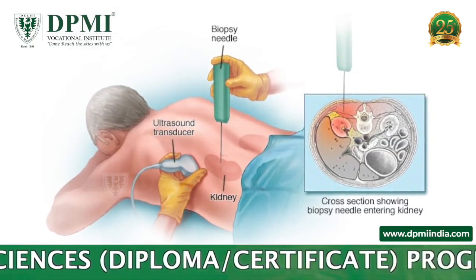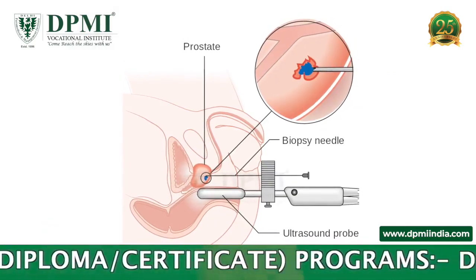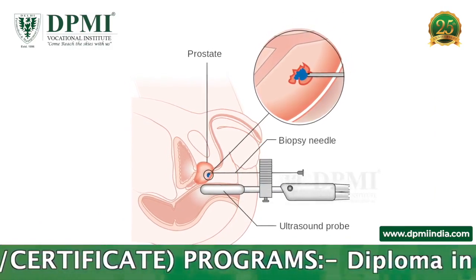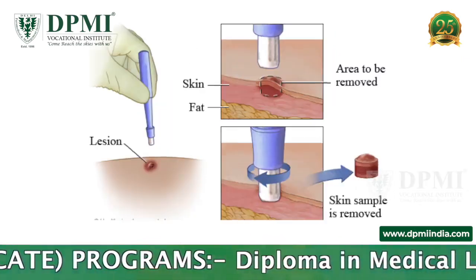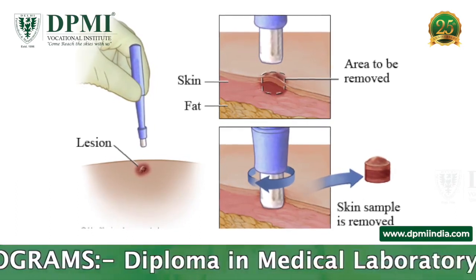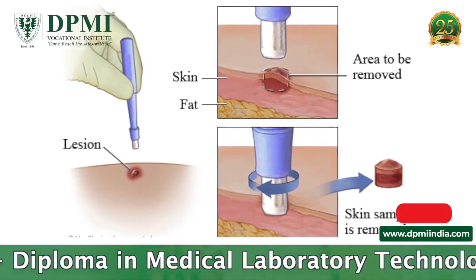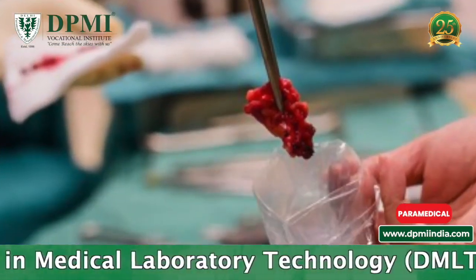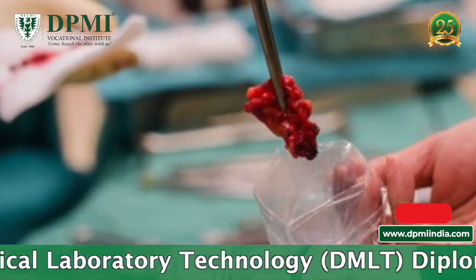A kidney biopsy involves a needle injected through the skin on the back into the kidney. In a prostate biopsy, multiple needle biopsies are taken at once from the prostate gland via a probe inserted into the rectum. A skin biopsy uses a punch method with a circular blade to obtain a cylindrical sample of skin tissue.